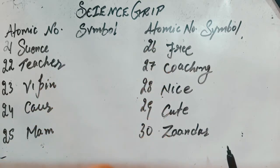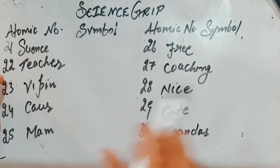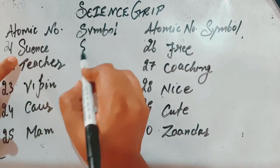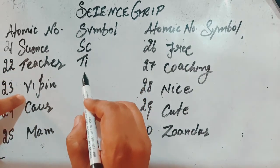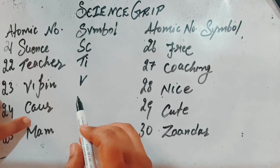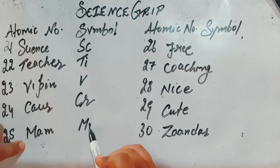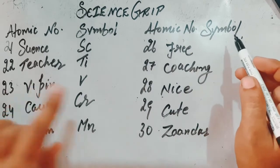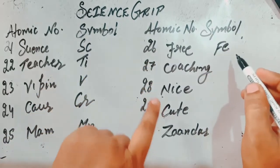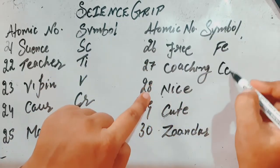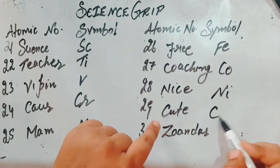Now I write the symbols using this sentence. 'Science' — Sc is scandium. 'Ti' — Ti is titanium. 'V' — vanadium. 'Cr' — chromium. 'Mn' — manganese. 'Fe' (free) — iron. 'Co' (coaching) — cobalt. 'Ni' — nickel. 'Cu' (cute) — copper.